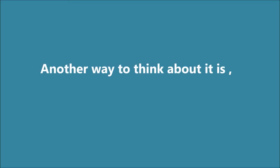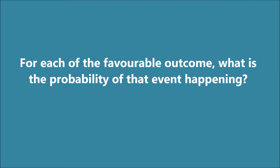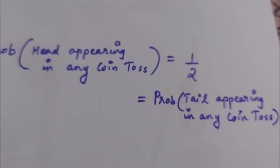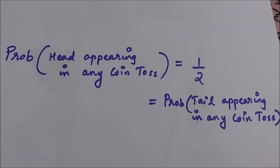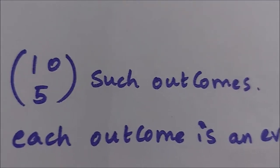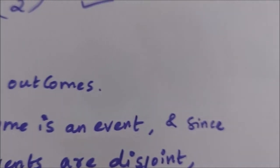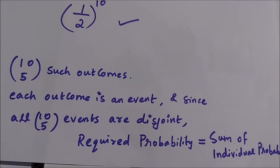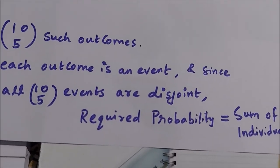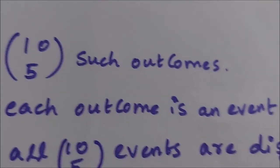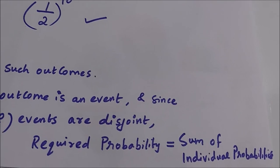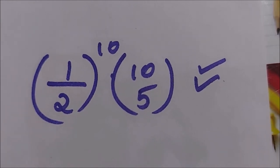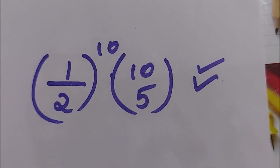There is another way to think about it. Take any favorable outcome. The probability of head appearing in any coin toss is 1/2 since it's a fair coin, and similarly for tails. The probability of any single favorable outcome happening is (1/2) raised to 10. There are 10 choose 5 such favorable outcomes, and since all of them are disjoint, we can add up the individual probabilities. Hence, the required probability is 10 choose 5 times (1/2) raised to 10 — confirming our answer that the number of heads equals the number of tails.